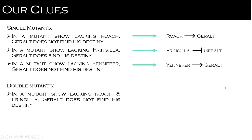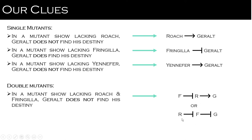In a mutant lacking both Roche and Fringilla, Geralt does not find his destiny — this helps us put things in order. We can either say that Fringilla represses Roche who activates Geralt, or that Roche represses Fringilla who represses Geralt. Since Roche has to be actively present for Geralt to find his destiny, the first scenario must be the correct order.